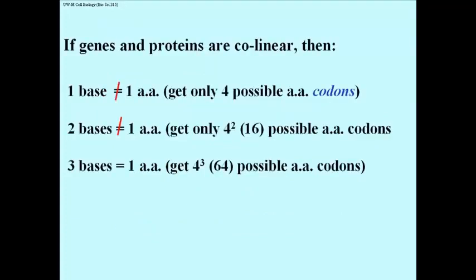If genes and proteins are indeed collinear, one is free to speculate as follows. Obviously one base couldn't mean one amino acid, otherwise you would only be able to code for four possible amino acids. You'd only get four codons.